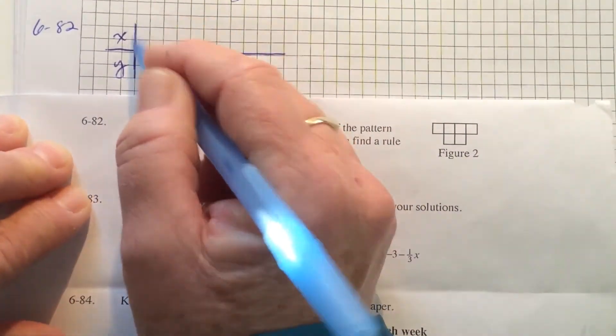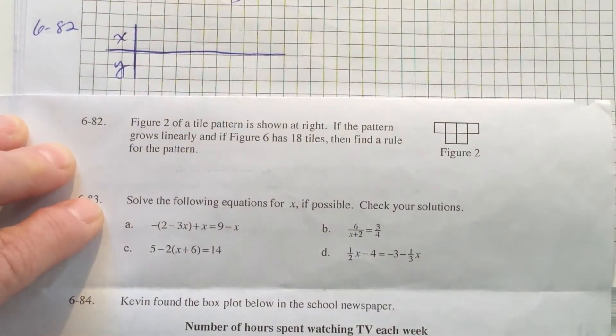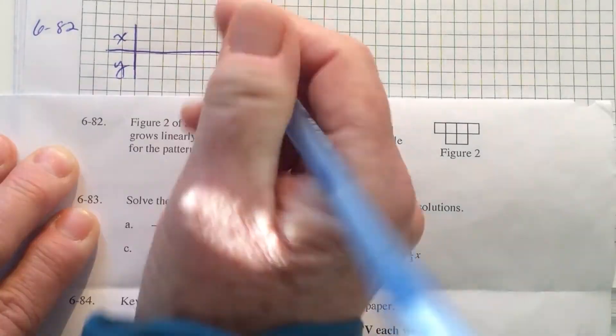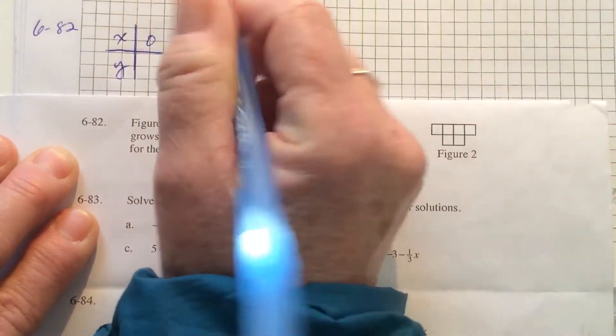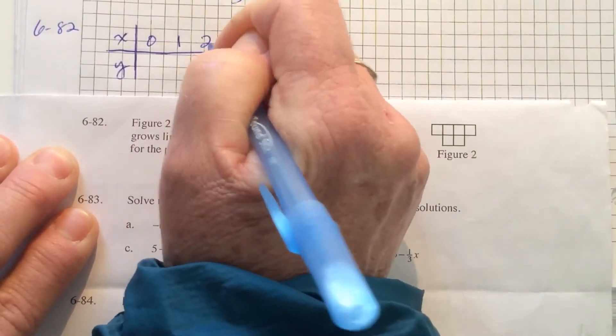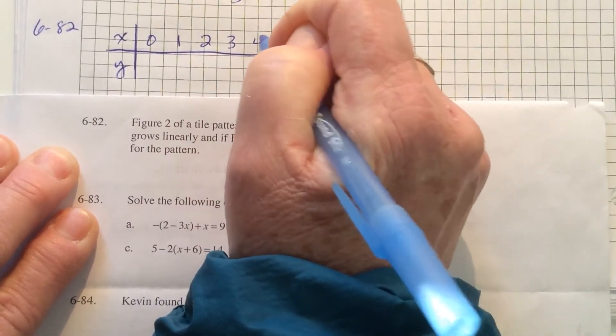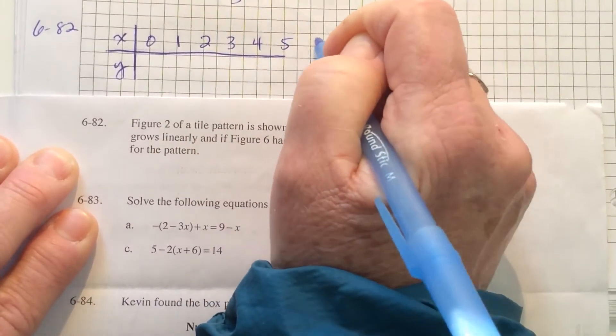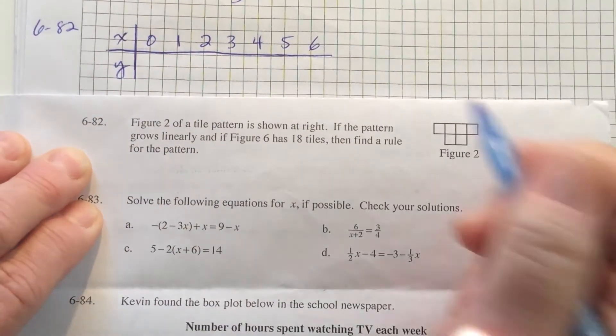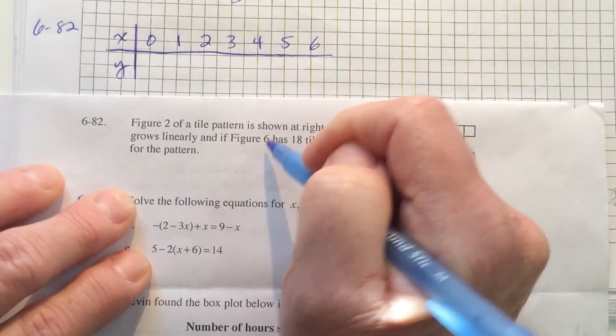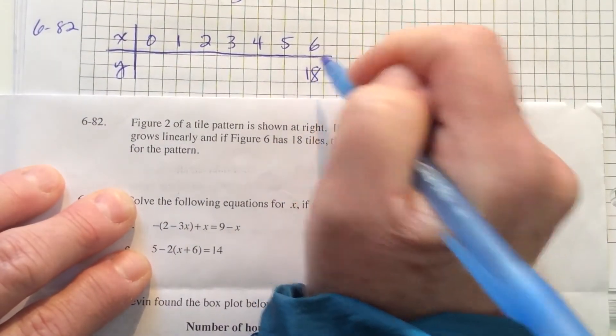So I'm going to start by making a table to organize my information. To find a rule, I need figure 0, and then I'll put 1, 2, 3, 4, 5, and 6, because we are told that figure 6 has 18 tiles.